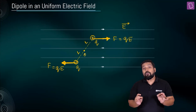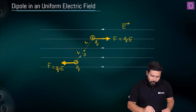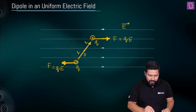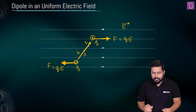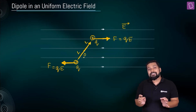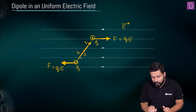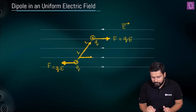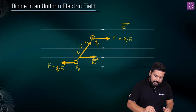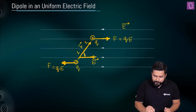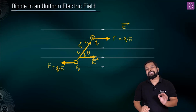If I talk about the dipole moment vector, the dipole moment vector is from negative to positive — that is in this direction. This is the dipole moment vector. And let us say we have placed this dipole such that the dipole moment vector is making an angle of theta with the electric field vector. This is the direction of the electric field vector, this is the direction of the dipole moment vector, and the angle between them is theta.